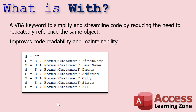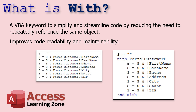For example, consider this block of code here. If we're building a string called S and we want to add to it the first name, last name, phone number, and so on from the CustomerF form, we have to say S equals S and Forms!CustomerF.FirstName, Forms!CustomerF.LastName — you have to repeat that every time. You can copy and paste it, but if you have to make a change later on, that's a lot of work.